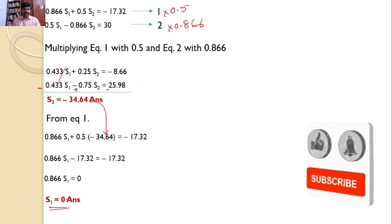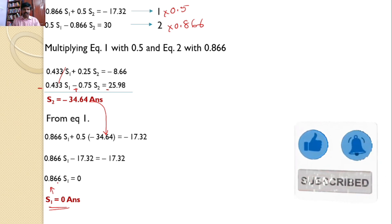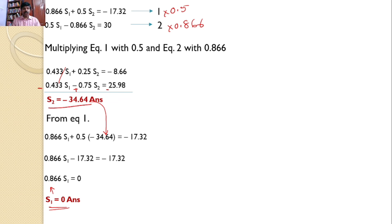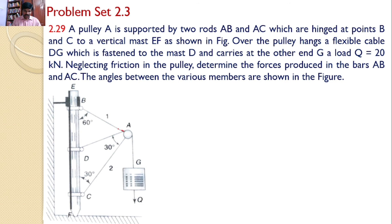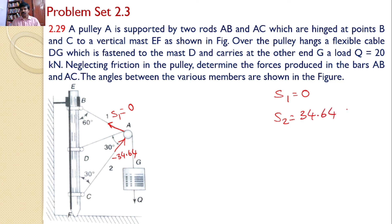There is no force developed in rod AB, so S1 equals 0. The force S2 is negative, meaning rod AC is in compression. The final answers are: S1 = 0 and S2 = 34.64 kN compressive. These are the answers for the given problem.